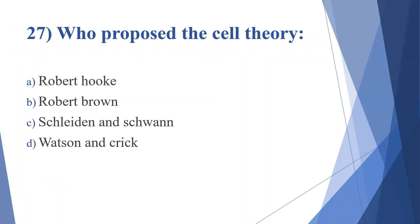Twenty-seventh question: who proposed the cell theory? Option A: Robert Hooke. Option B: Robert Brown. Option C: Schleiden and Schwann. Option D: Watson and Crick. Answer is option C, Schleiden and Schwann.